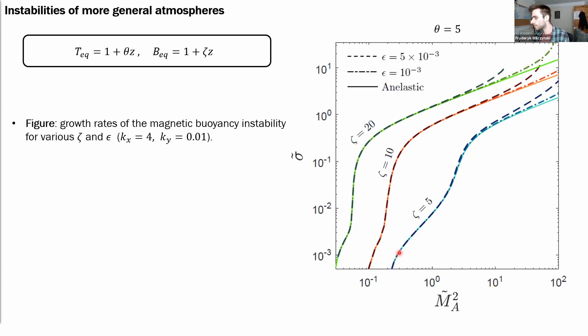And again, you can see that there is good agreement between the compressible and the anelastic system, so long as epsilon is small, meaning we're close to adiabatic, and this scaled Mach number is order one quantity.